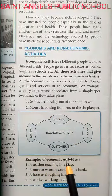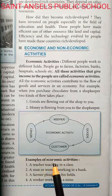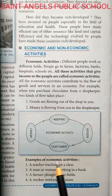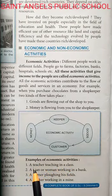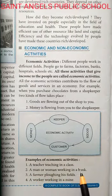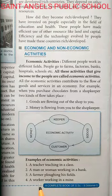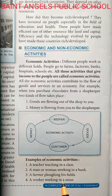Examples of Economic Activities: a teacher teaching in a class, a man or a woman working in a bank, a farmer plowing his field, a worker working in a mine. किलास में कोई teacher teach कर रहा है, बैंक में कोई आदमी या औरत काम कर रही है, एक किसान अपना खेत जोत रहा है, कोई मजदूर खान में काम कर रहा है — यह सब Economic Activities कहलाएंगी।